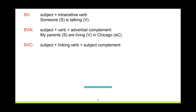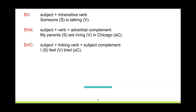The third basic structure can have a subject, a linking verb, and a subject complement. Look at the example: 'I' — this is the subject — 'feel tired' — 'feel' is the main verb, and 'tired' is a subject complement.